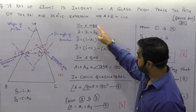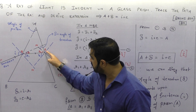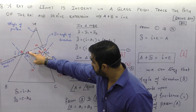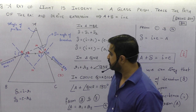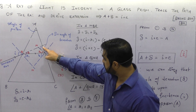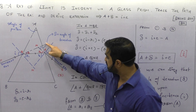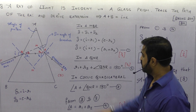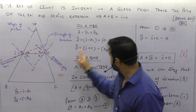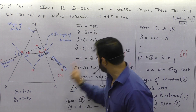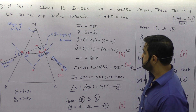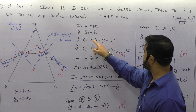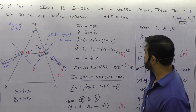In triangle MQR, I can say the exterior angle equals the sum of two remote interior angles. So delta equals delta1 plus delta2. Substituting: delta1 is i minus r1 and delta2 is e minus r2, so delta equals i plus e minus r1 minus r2, or i plus e minus (r1 plus r2).